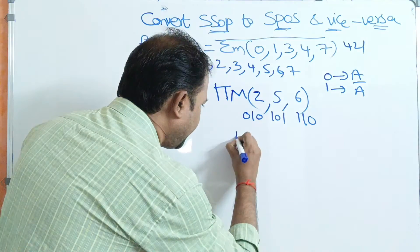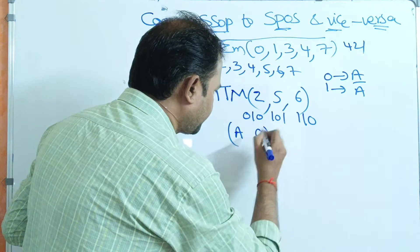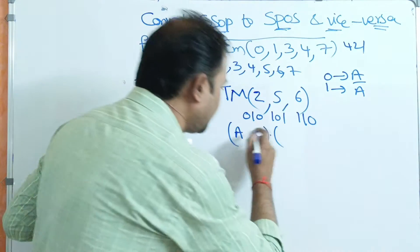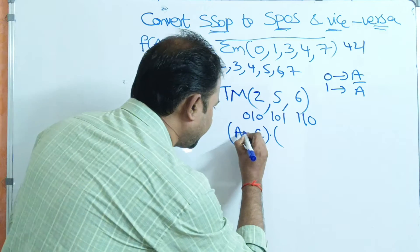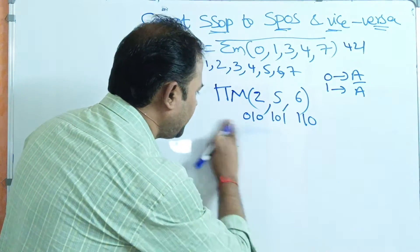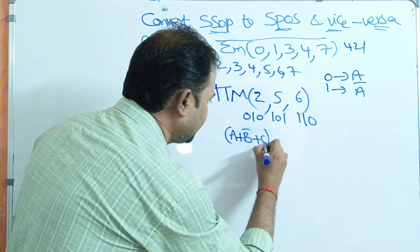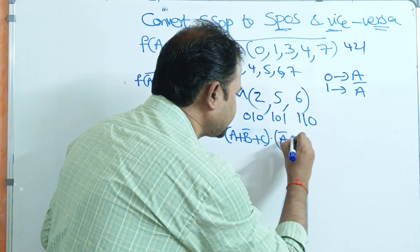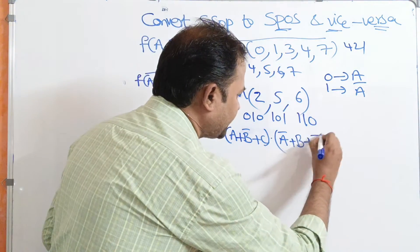For maxterm 2 (binary 0,1,0): 0 means actual term — A. 1 means complement — B bar. 0 means actual term — C. So the maxterm is A plus B bar plus C. For maxterm 5 (binary 1,0,1): 1 means complement — A bar. 0 means actual term — B plus. 1 means complement — C bar.